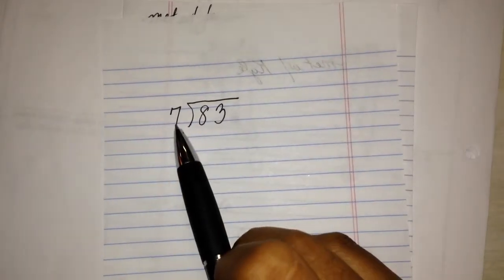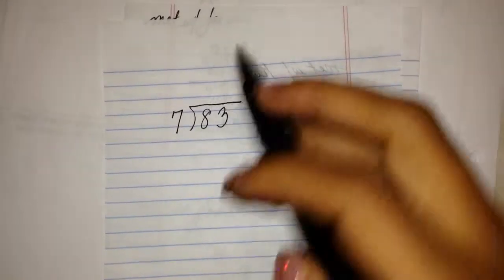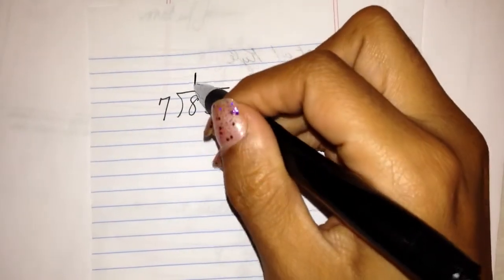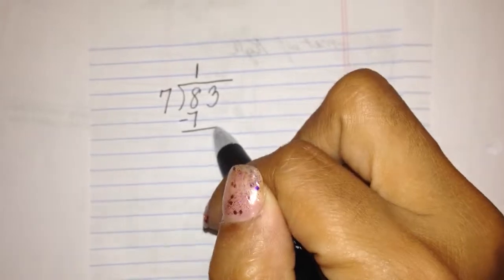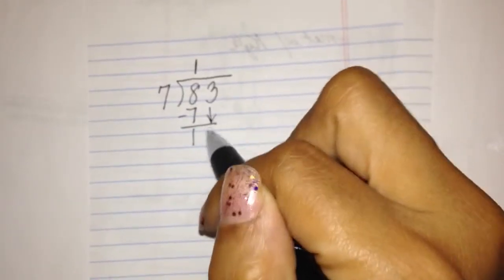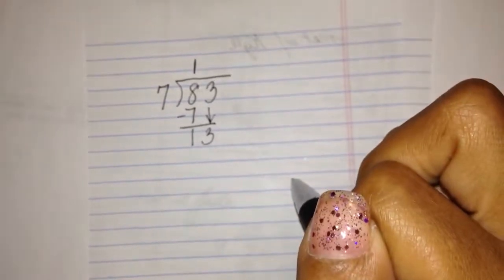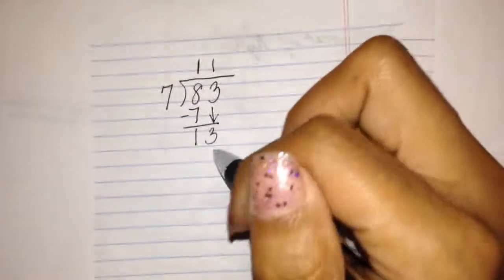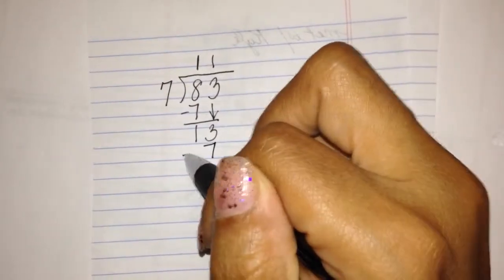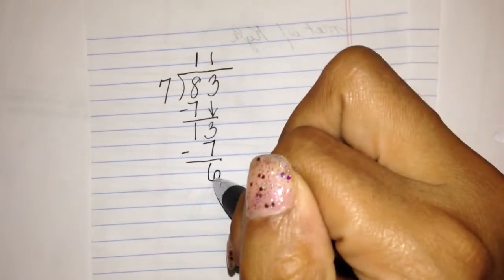So I'm going to start the way I always do, with just my regular division. 7 goes into 8 one time. 1 times 7 is 7. Subtract. Bring down the 3. 13 divided by 7 is 1. 1 times 7 is 7. And I have a 6 left over.